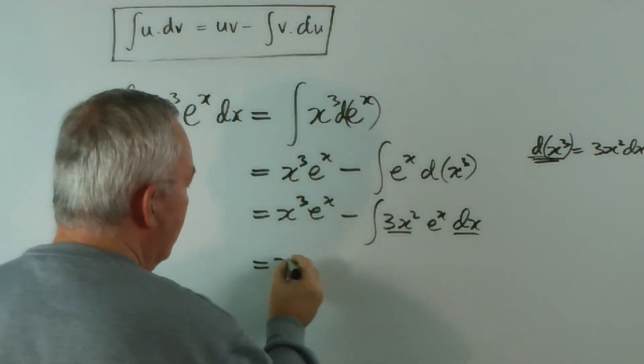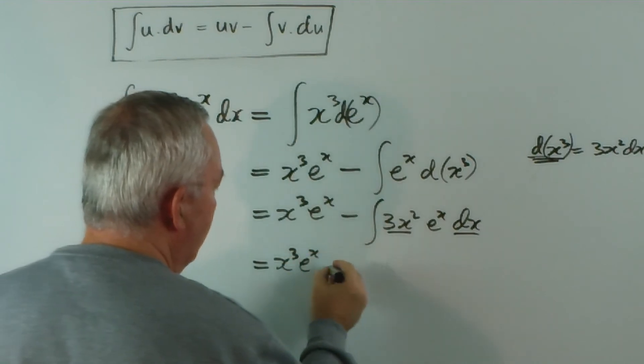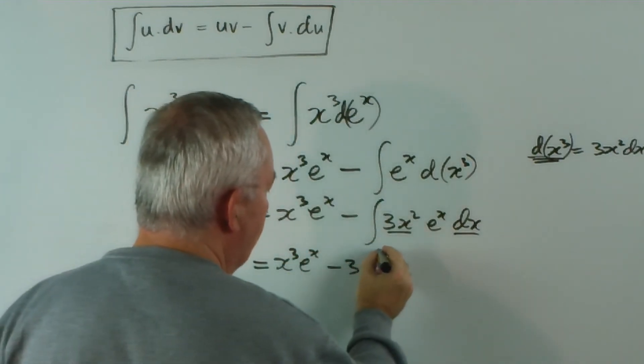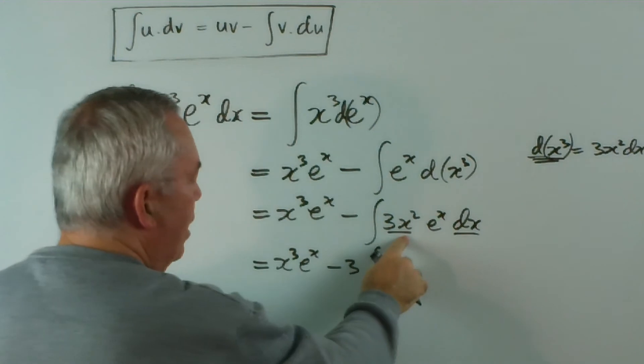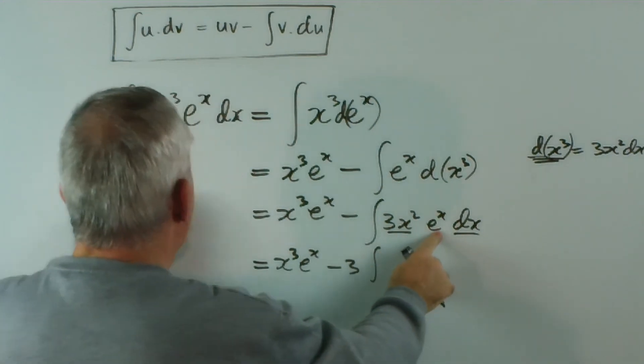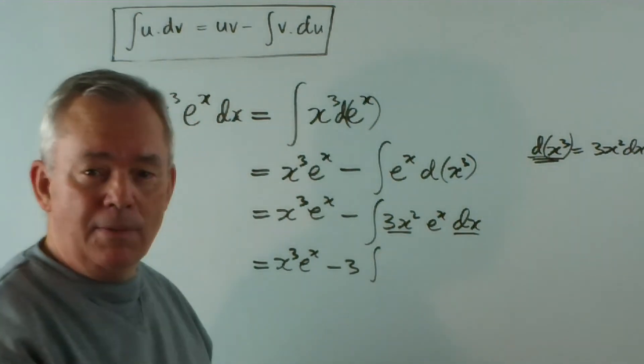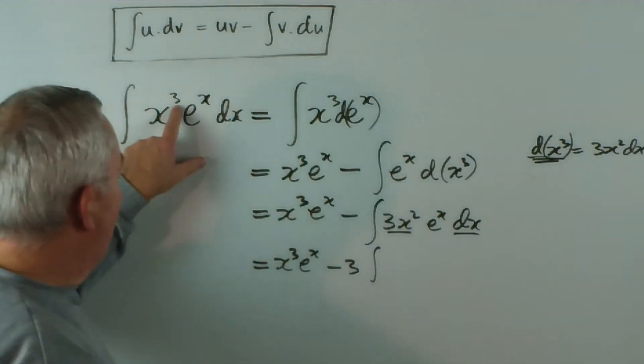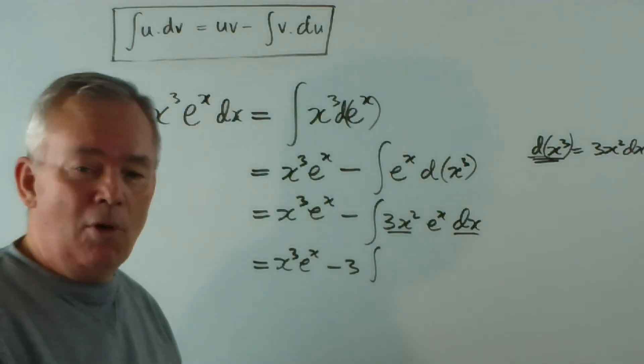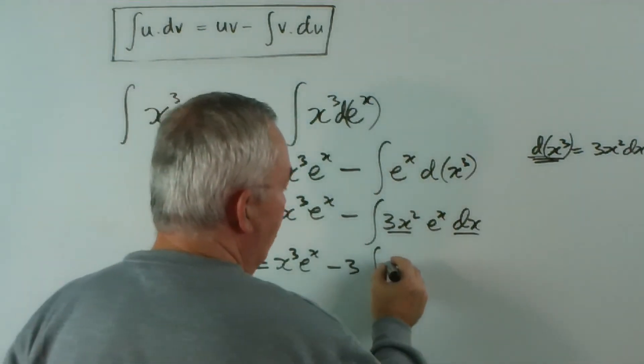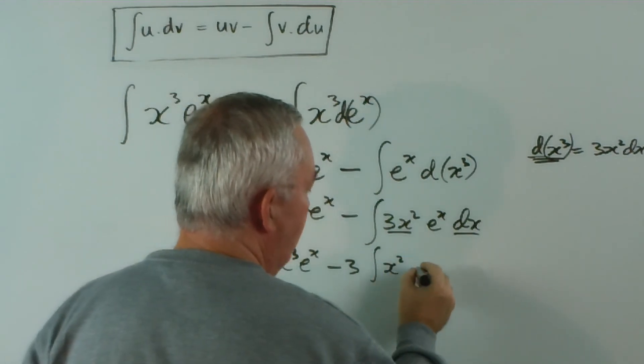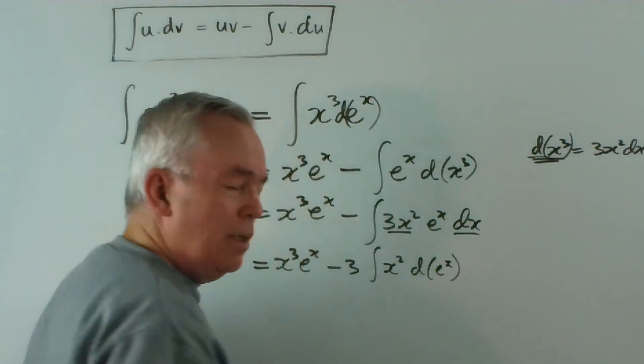Now, I hope you notice - I can move the 3 outside - that I've got x^2 e^x instead of x^3 e^x now. It's reduced this power by 1, but I've got the same problem all over again. So, I'm going to write x^2 d(e^x). And guess what?